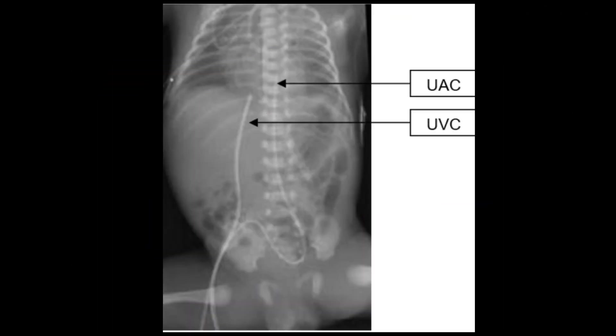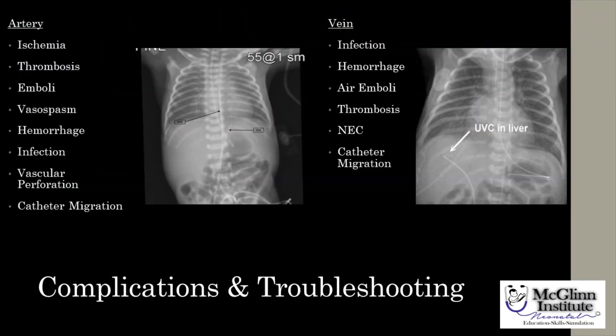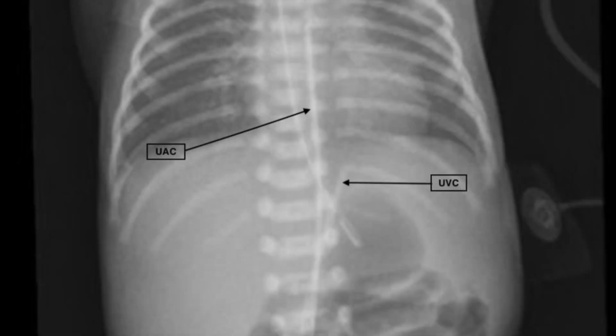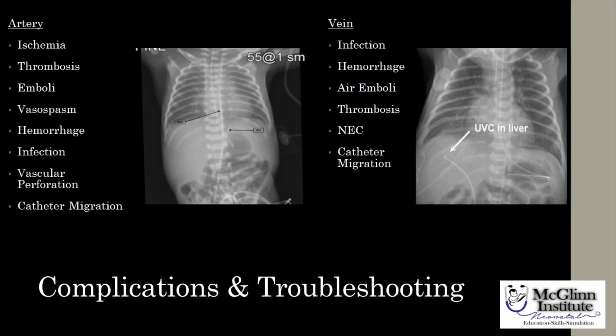After making adjustments as needed on catheter depth and confirming that depth and placement on x-ray, you can then suture each of the lines in place. As with any invasive procedure in the NICU, complications can occur. The UAC can cause ischemia, thrombosis, emboli, vasospasm, hemorrhage, infection, vascular perforation, or there can be catheter migration.